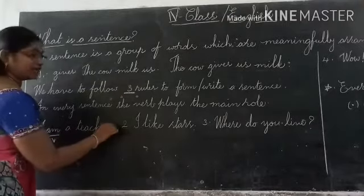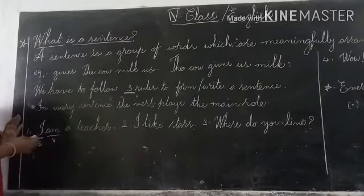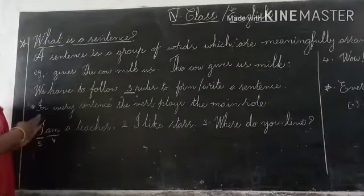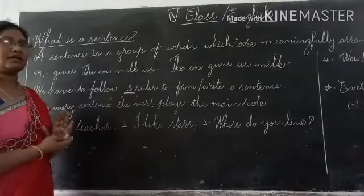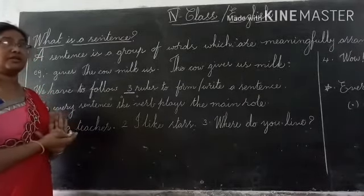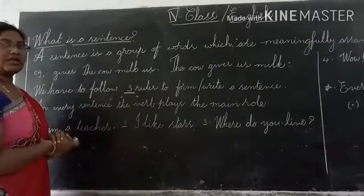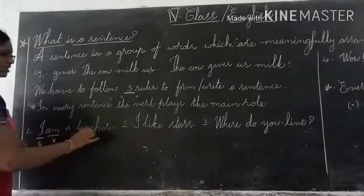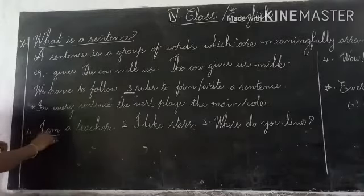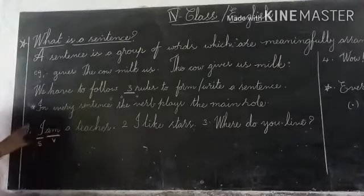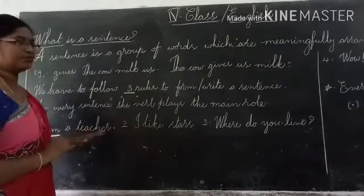Any sentence, we have to end the sentence properly. If it is a declarative or imperative sentence, further classes I will explain what is an imperative sentence or declarative sentence, exclamatory sentence or interrogative sentence. Next class, I am going to explain types of sentences. When you end any sentence, we have to end with a full stop. We have to start with a capital letter and the sentence must contain a verb. At the end, we have to end the sentence with a full stop.